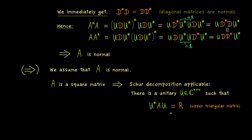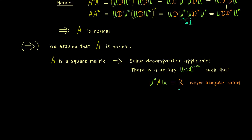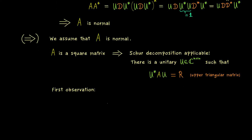The Schur decomposition does not guarantee a diagonal matrix, but that is what we have to show. In the case that A is normal, this upper triangular matrix R must in fact be a diagonal matrix. The first observation is that if A is normal, then R also has to be a normal matrix. To see that, we calculate R* R and R R* and show they are equal.